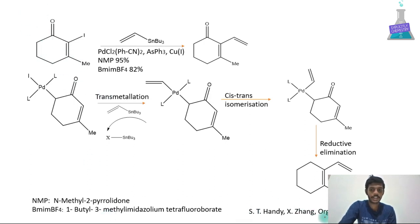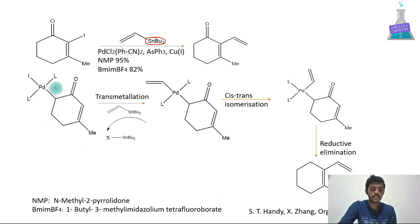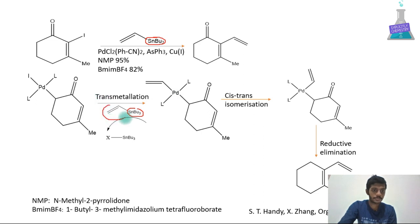This is an example taken from an Organic Letters paper. The starting material is treated with an organotin compound in the presence of a palladium(0) complex, and a copper co-catalyst is added — similar to the Sonogashira coupling — but this is the Stille coupling reaction because we are using an organotin compound. The mechanism begins with oxidative addition: palladium adds with iodine as the leaving group, and the ligand is PhCN twice in trans position. The R group is also attached in trans position to iodine.